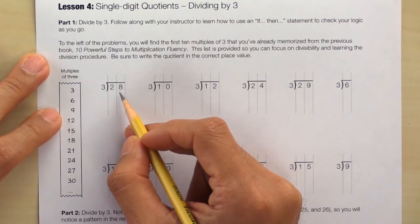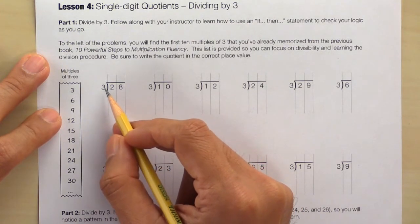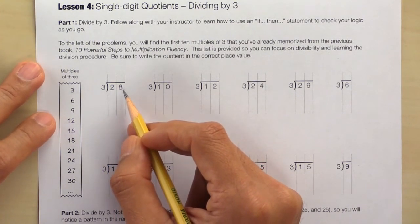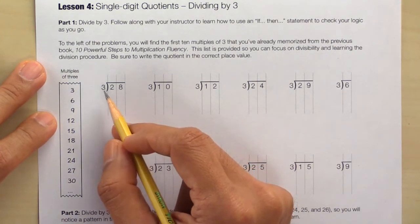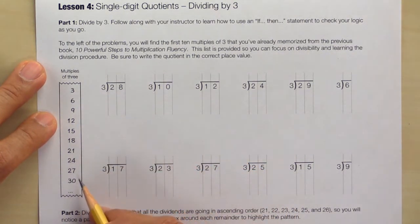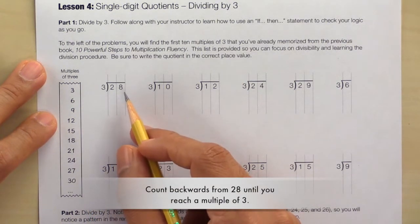Let's go over two examples in part 1. Here we have 28 divided by 3. Is 28 evenly divisible by 3? The answer is no because 28 is not on the list.